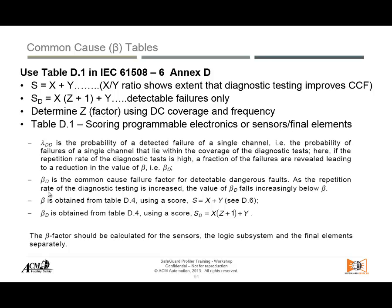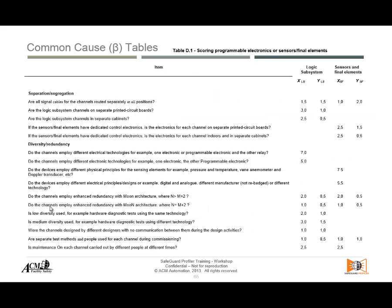Beta is obtained from Table D4 using the score of the formula S = X + 1. Beta D is obtained from the same Table D4 but applying the diagnostic using the Z factor for frequency: X times C plus 1 plus Y. So the X part is affected by the diagnostic coverage of common causes.